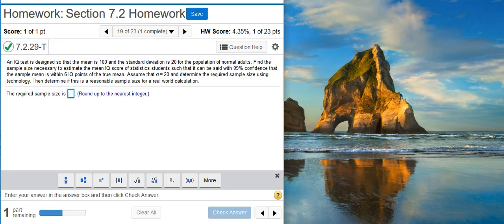can be said with 99% confidence that the sample mean is within 6 IQ points of the true mean. Assume that sigma equals 20 and determine the required sample size using technology. Then determine if this is a reasonable sample size for a real-world calculation.